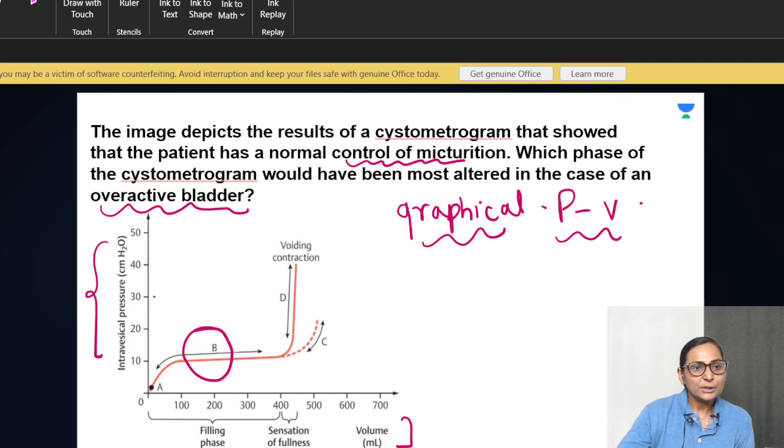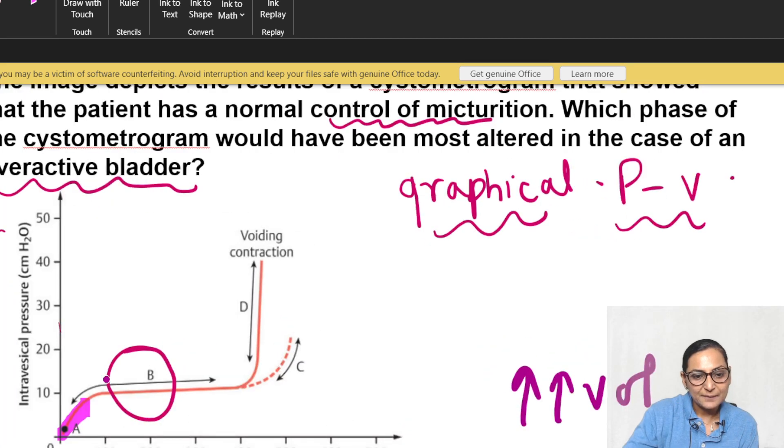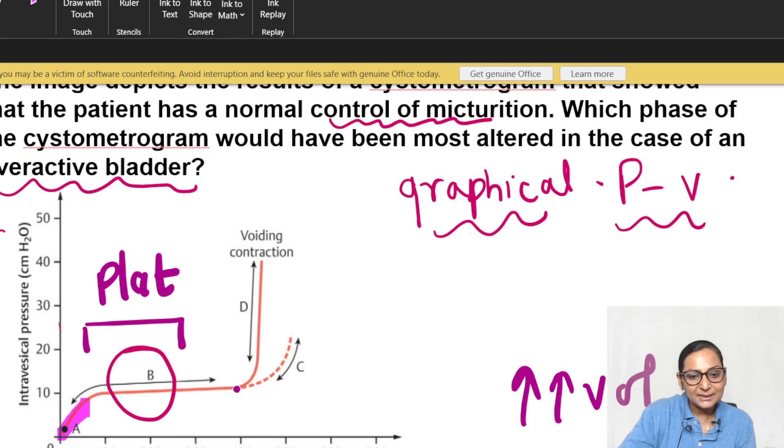With initial filling of bladder with urine, when there is less volume, there is a small abrupt rise in pressure. However, if you keep accumulating more volume, you will see there is no further increase in the pressure. This plateau, which is segment B, I hope you can appreciate. Finally, the micturition reflex is set up when the volume is around 400 ml.